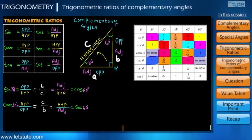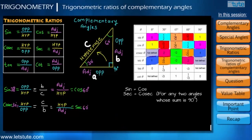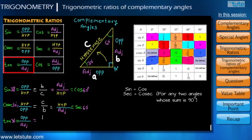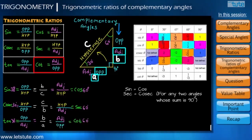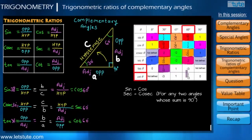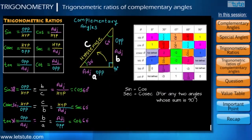So far we have seen that the value of sin equals cos, and sec equals cosec, for any two angles whose sum is 90 degrees. In the same way, tan is the ratio of opposite side to adjacent side, equal to B upon A. Since B is adjacent and A is opposite for the 60 degree angle, and adjacent to opposite deals with cot, we get tan 30 equals cot 60. Cross-checking with the table, the value of tan 30 is 1 upon root 3, which is the same as cot 60. Similarly, the value of tan 0 is the same as cot 90, and so on.